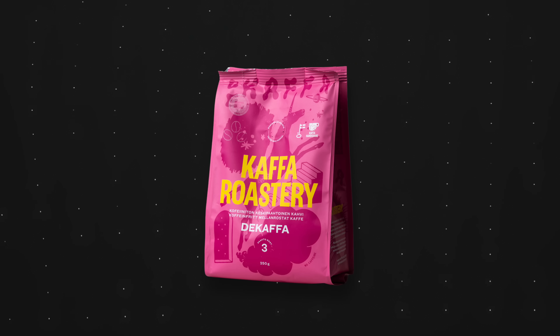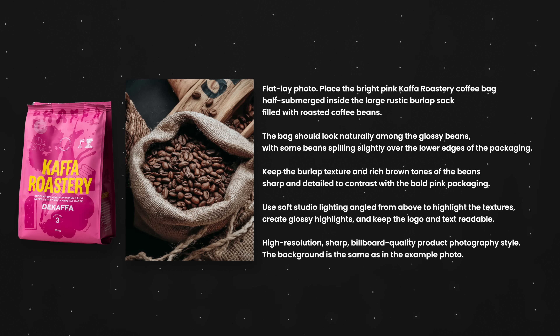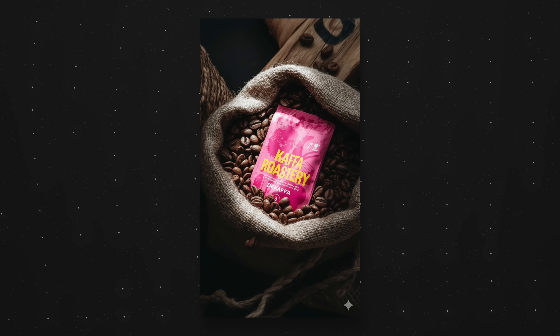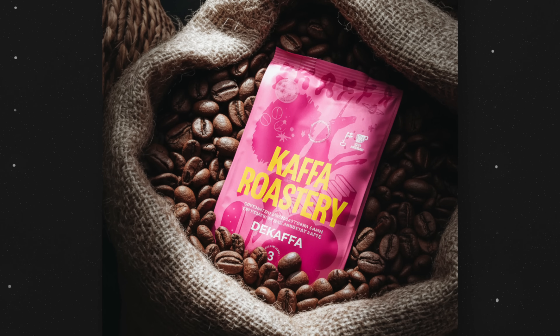Moving on, I have a pink bag of coffee beans I'd like to place in a new environment. I gave NanoBanana the two images and a prompt, and this is the result. The lighting was a bit too flat so I asked it to change to something more dramatic, and this is what it gave me. The fact that you can change the lighting simply by talking to the model is so powerful for people who don't have image editing skills — this is a real game changer.